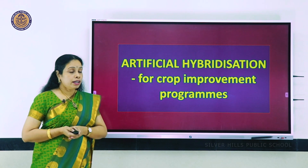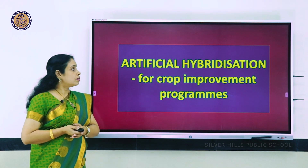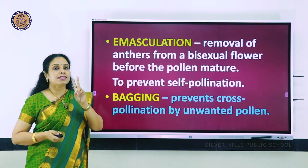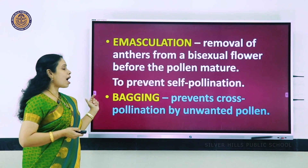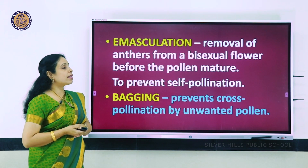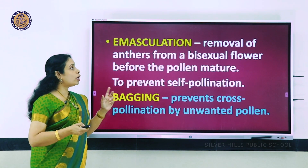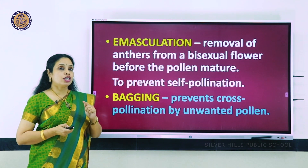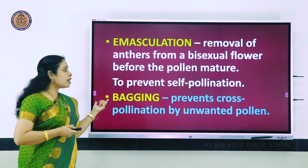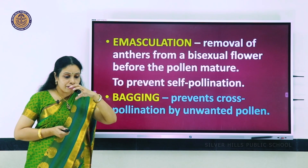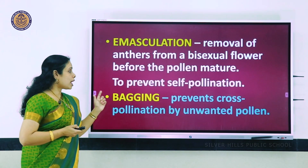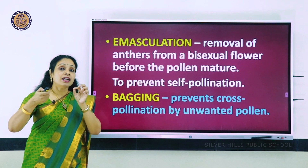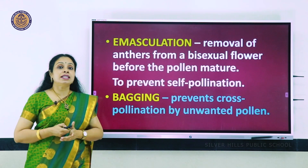Farmers employ artificial hybridization techniques for crop improvement programs to produce better crops. Two important techniques are emasculation and bagging. Emasculation is the removal of anthers from a bisexual flower before the pollen grains mature - this prevents self-pollination. After emasculation, bagging is done: the flower is covered by a polythene cover so unwanted pollen grains cannot fall on it. The scientist or farmer can then open that cover and deposit the desired pollen grains.